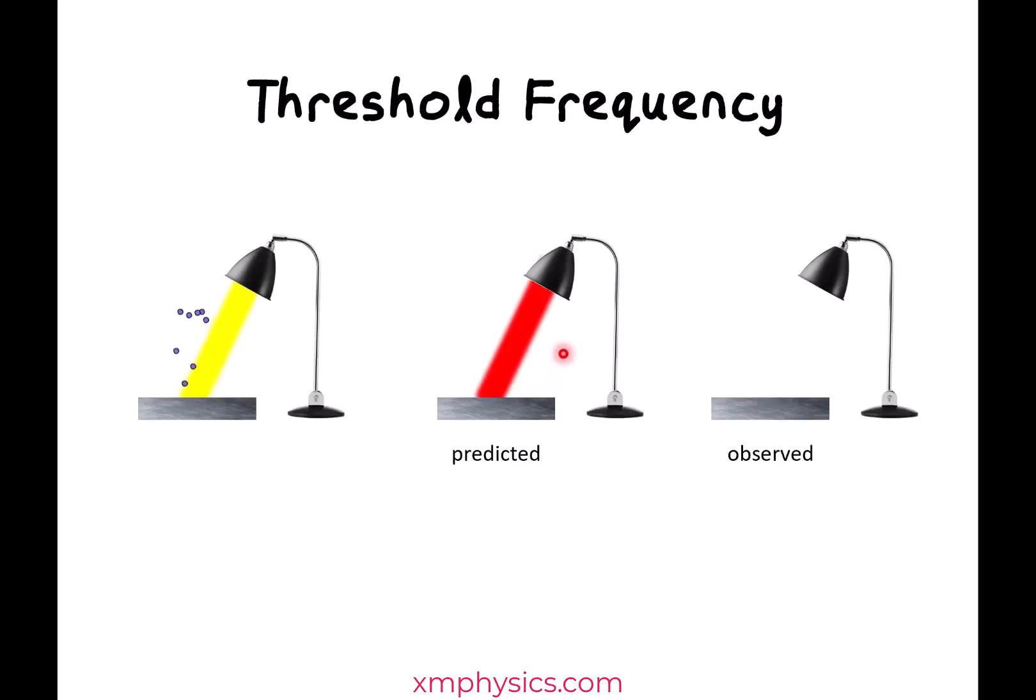Okay, what if we lower the frequency instead? So red light has a lower frequency, longer wavelength, yeah? Again, according to the wave model, the frequency of the light shouldn't matter. As long as it's intense enough, as long as the intensity is high enough, the rate of transfer of energy should be the same. So we should get the same photoelectric emission. What's the actual observation? Actual observation was like that. Nothing.